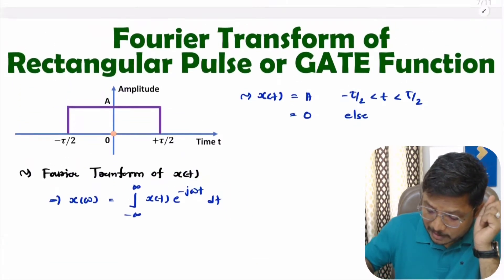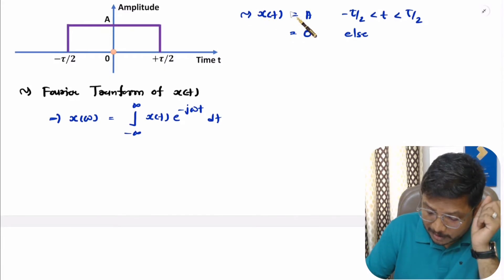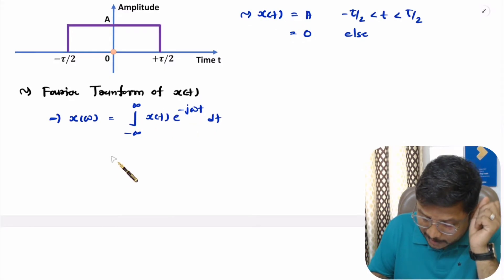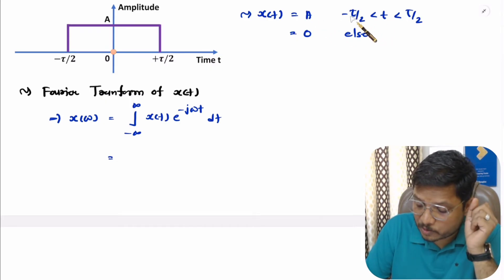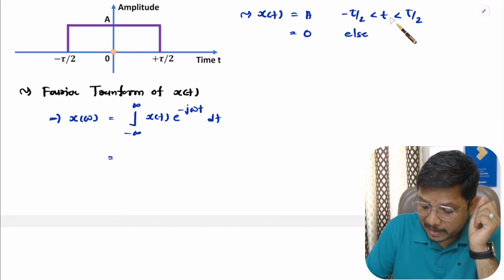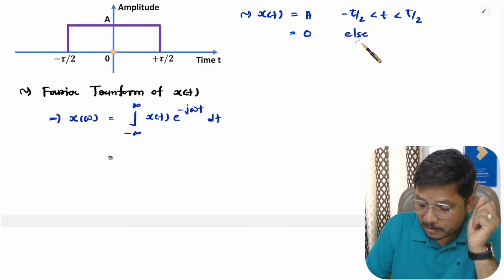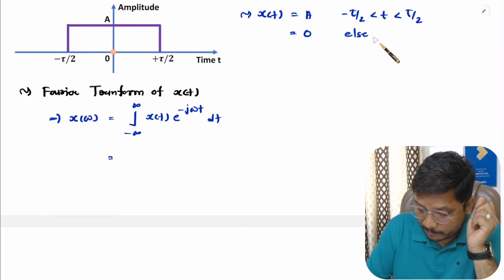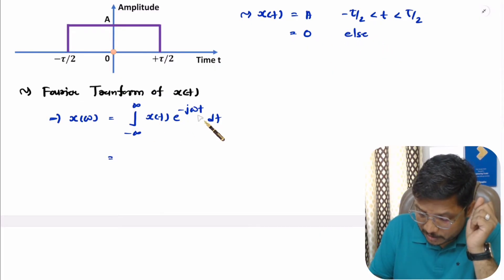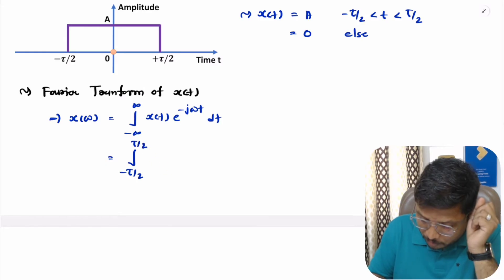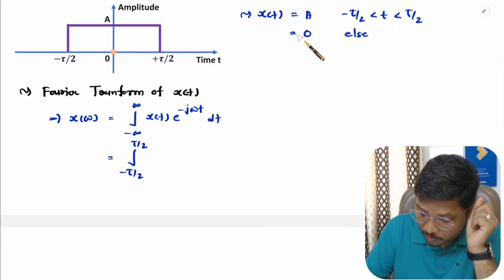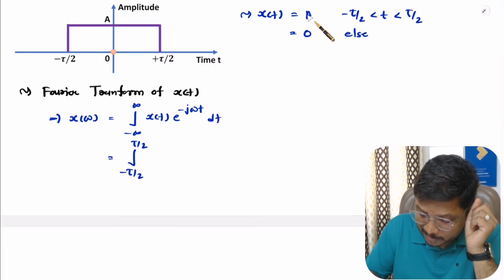Now we need to place the given function into this integration. Since x(t) has magnitude A for the duration of minus τ/2 to plus τ/2 and is 0 elsewhere, only the interval from minus τ/2 to plus τ/2 contributes to the integration. So for that duration, the magnitude is A.